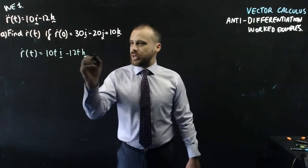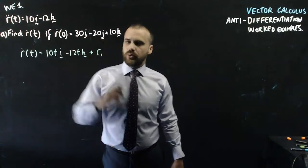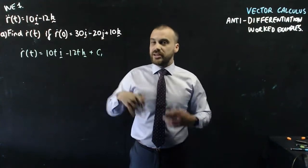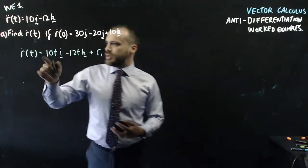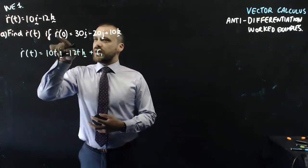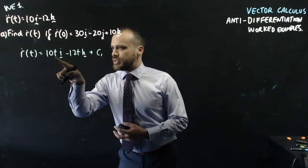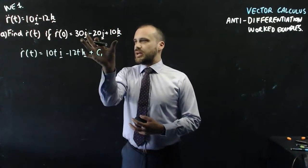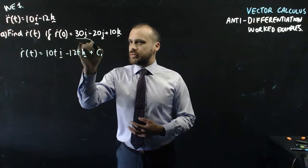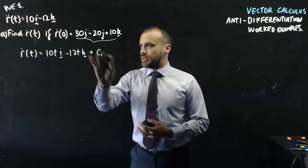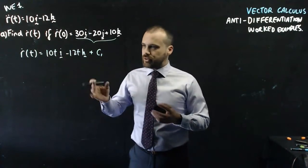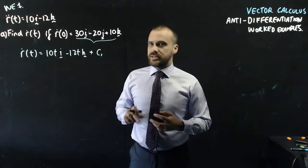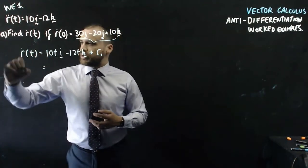And then we have plus, I'll call it c1, and that is our initial vector. All right, so I know that if r dot 0, so if I sub 0 in for this and 0 in for this, I will have an answer of that. And that, given it's our initial r dot value, that's what goes into our c1 there.